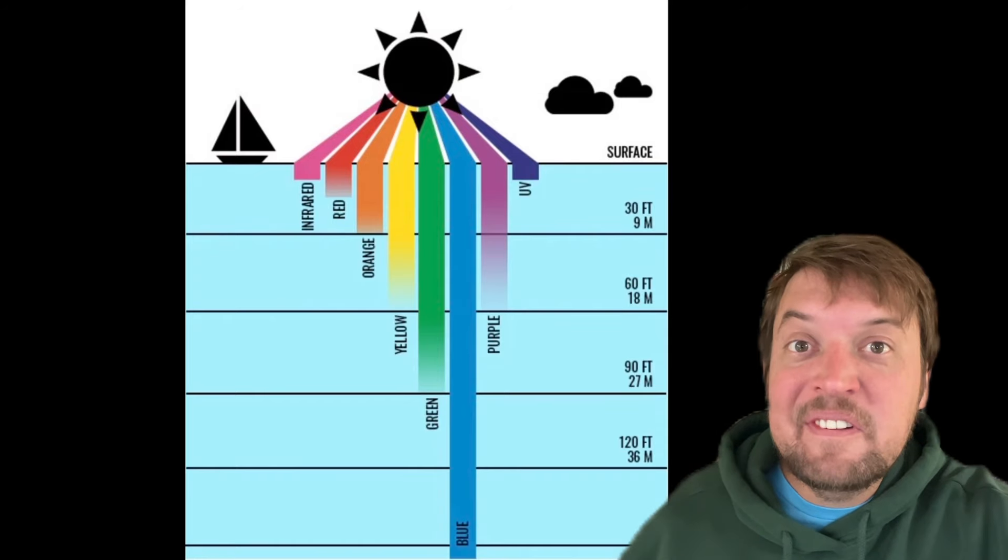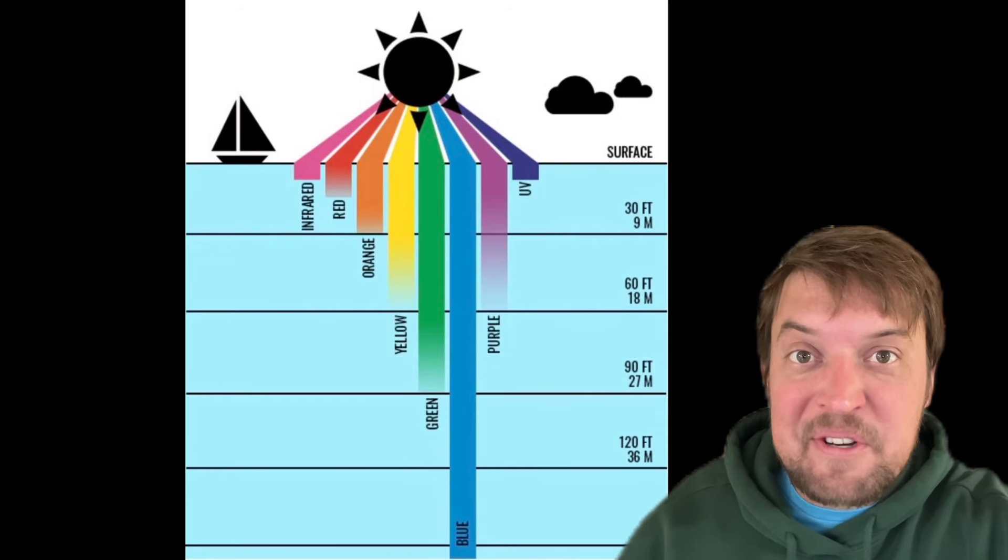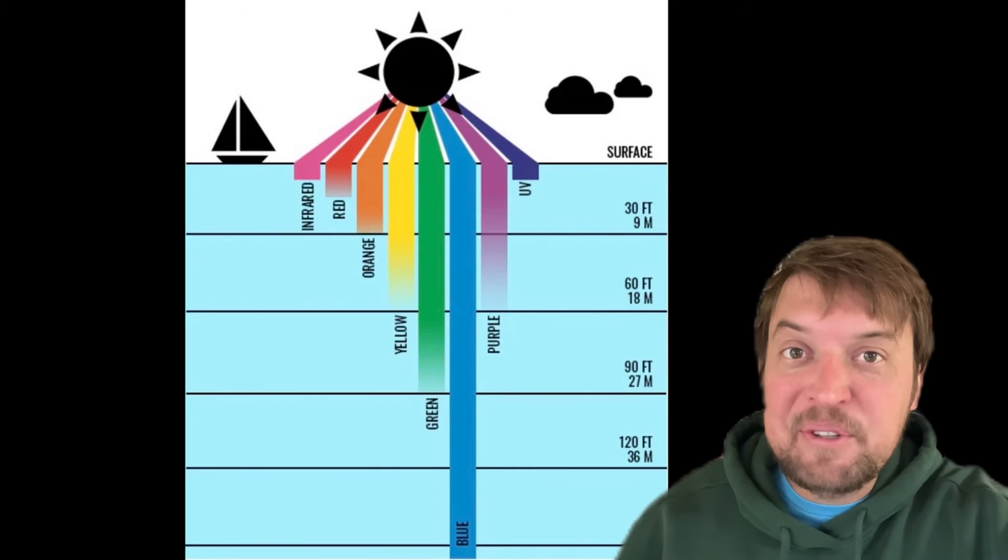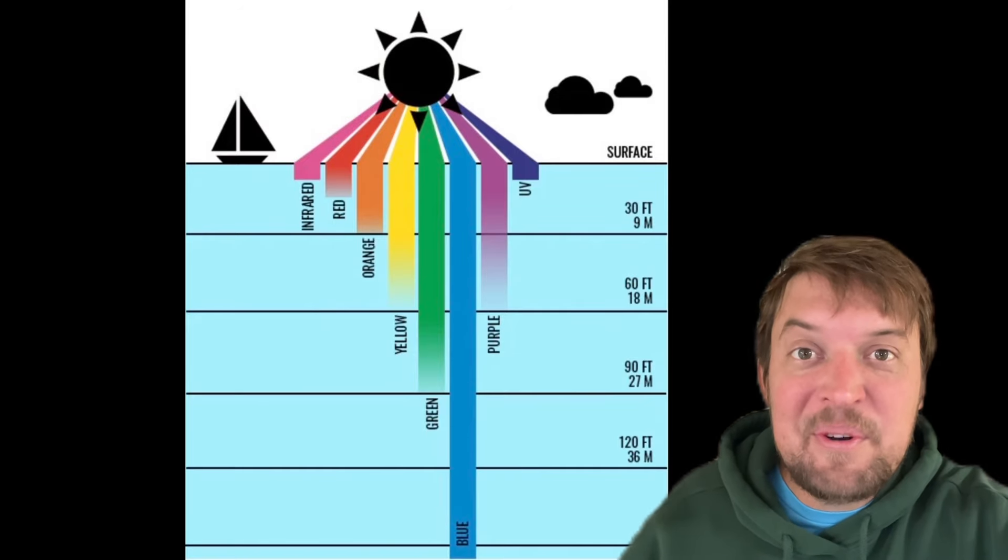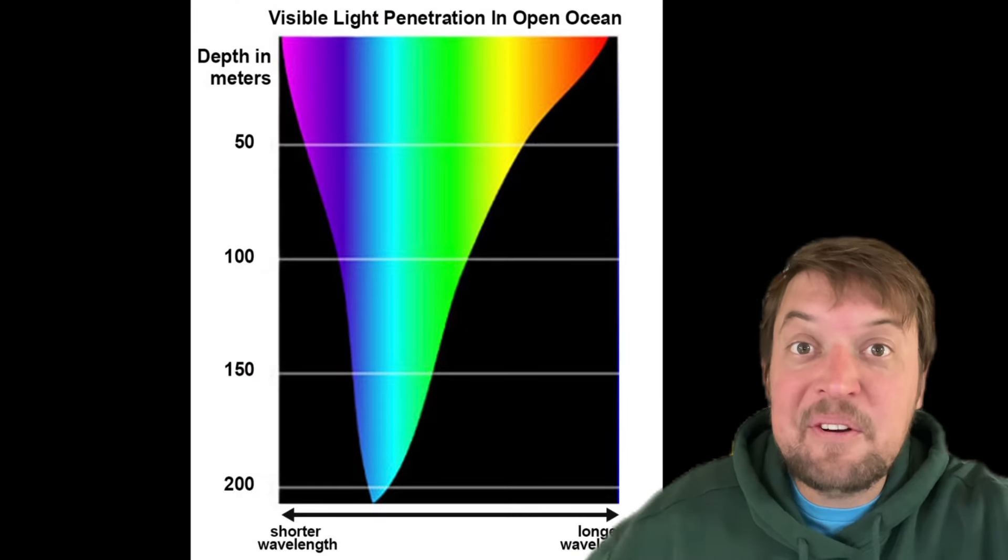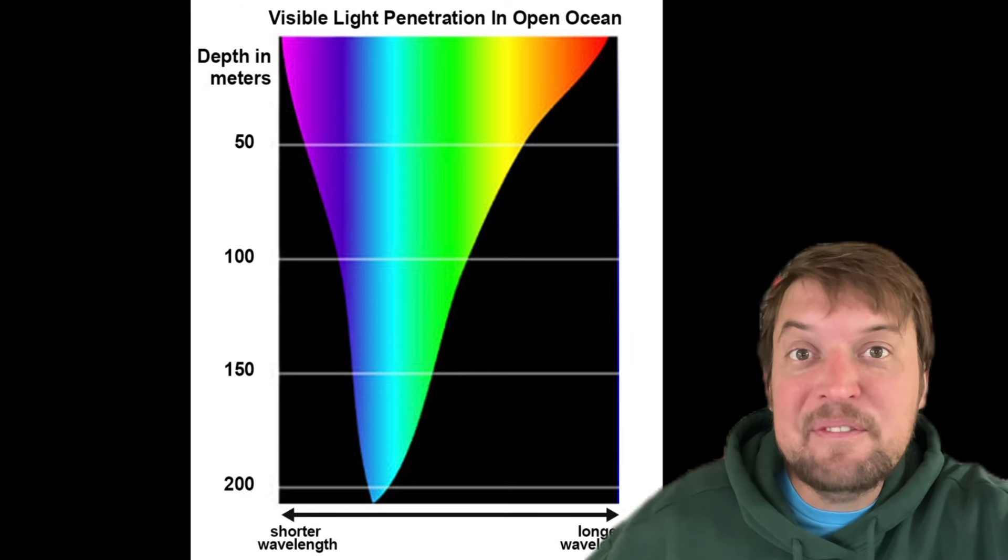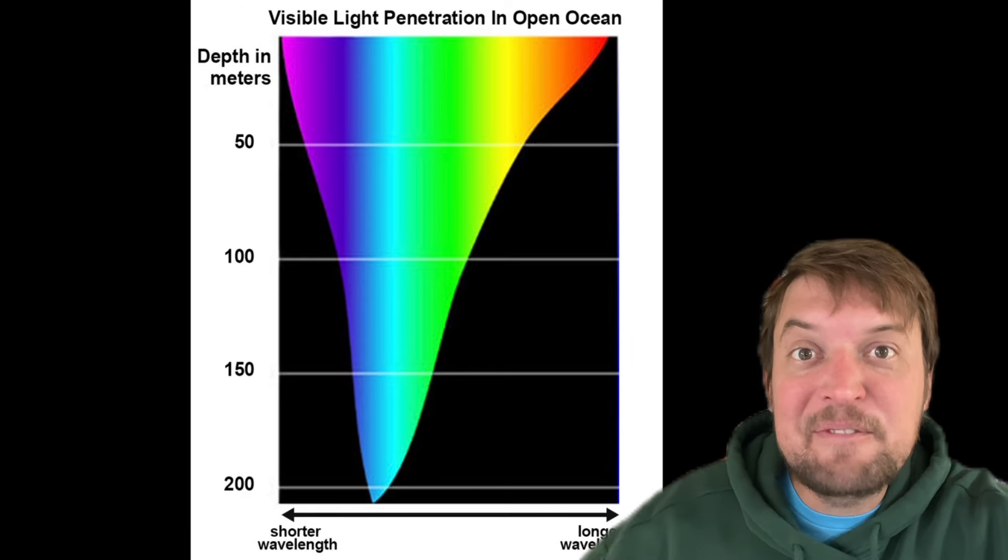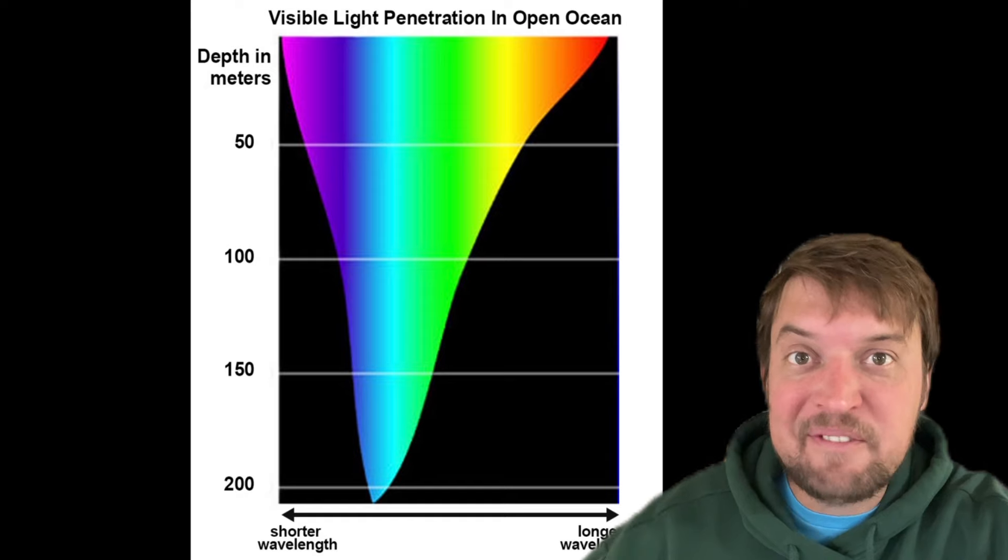And that means that light itself isn't a singular ecological resource. It's actually a multitude of resources depending on how deep you go in the water. And it turns out that there's a huge variety of photosynthetic pigments that different species of plankton use to photosynthesize different wavelengths of light.